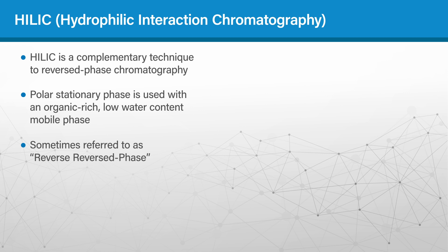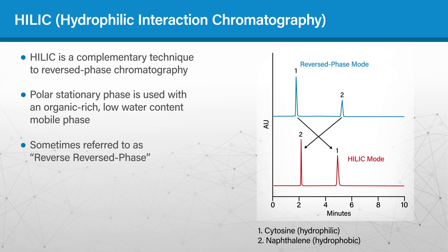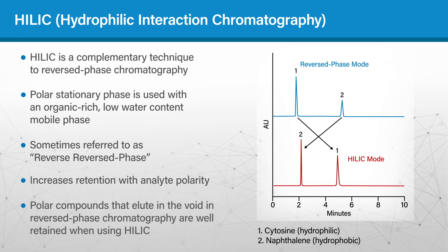The differences in the HILIC stationary phase and the mobile phase lead to a difference in retention and selectivity that is based on analyte hydrophobicity and hydrophilicity, as seen in the chromatography here, where the elution order is reversed for the hydrophilic and hydrophobic analytes. The benefit of HILIC over reverse phase chromatography is that retention increases with analyte polarity. Polar compounds that elute in the void in reverse phase chromatography are well retained when using HILIC.